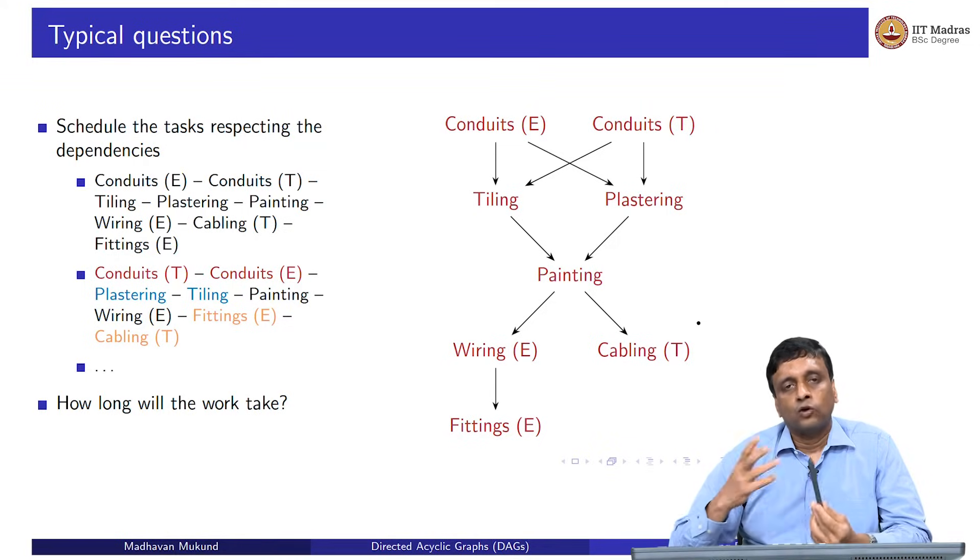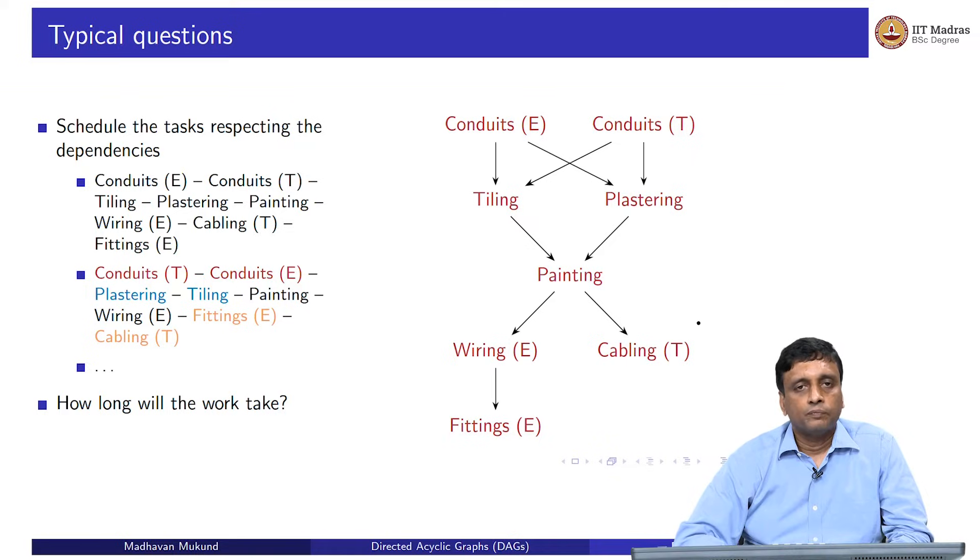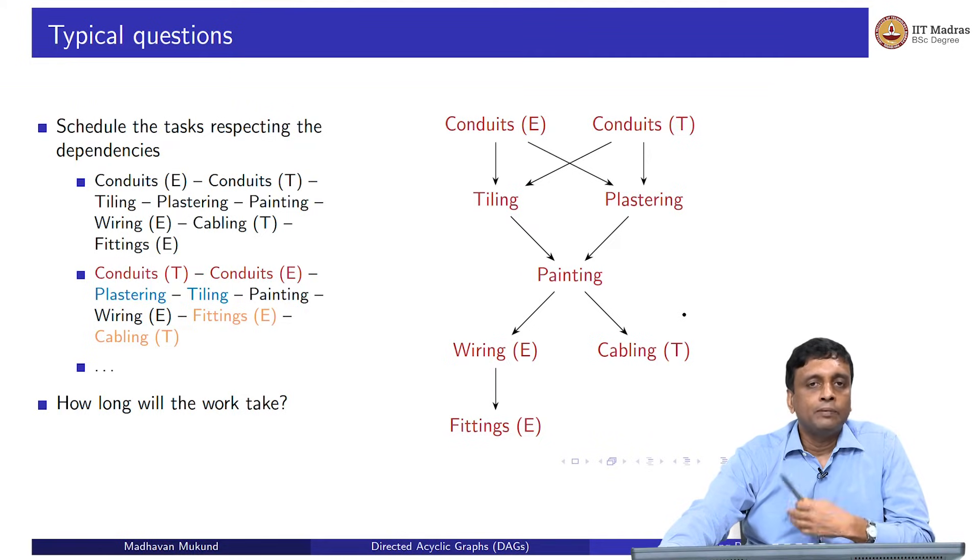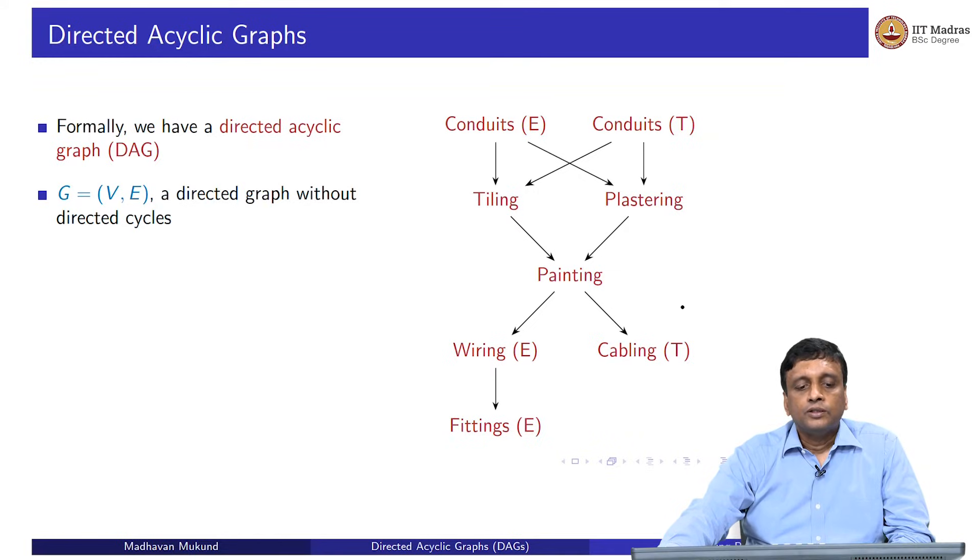We have the fact that we cannot violate this thing. If I have all my working staff available all the time, but I still have to do these and each of these has to be done on one or multiple days. What is the minimum number of days? How long will it take is basically a minimization problem. What is the fastest I can do this? This is a directed graph without cycles, which is often called a directed acyclic graph or a DAG.